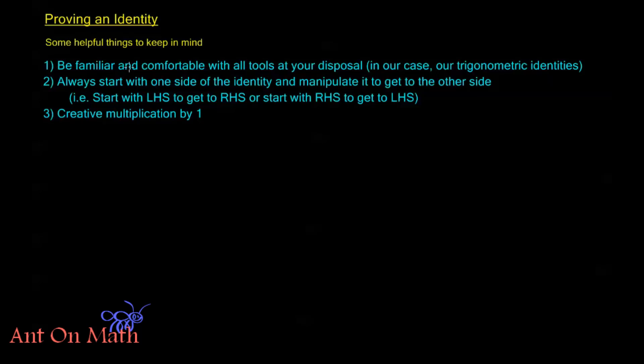The first helpful hint I can give is be very familiar and comfortable with all of the tools at your disposal. Our trigonometric identities are invaluable here. To succeed in a pre-calculus 2 course when you're dealing with proving trigonometric identities you really need to know all of the identities that you have. There's really no way around it. If you don't know the identities you're going to come across problems you won't be able to solve. You have to have these identities as tools in your Batman math belt that you can just pull out and use when the situation arises.